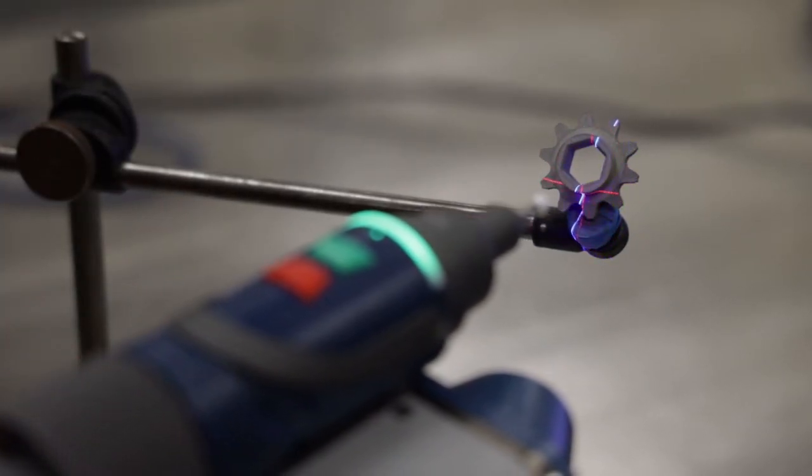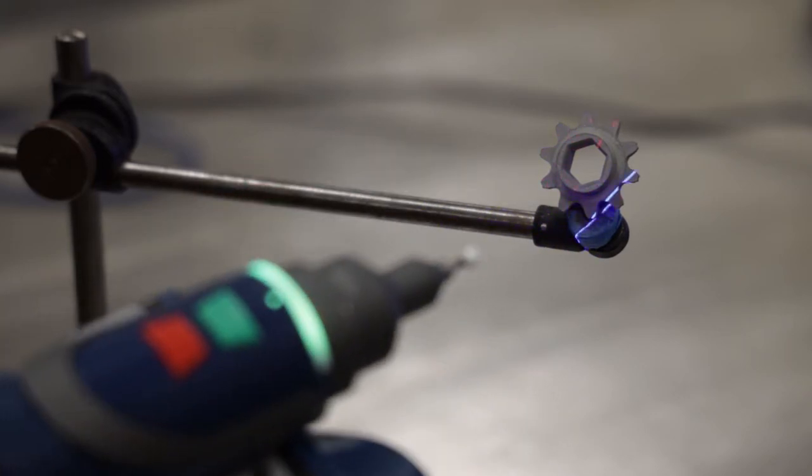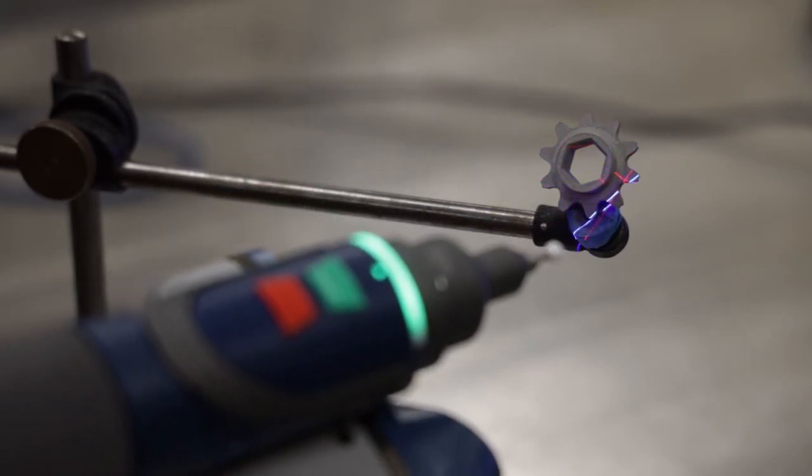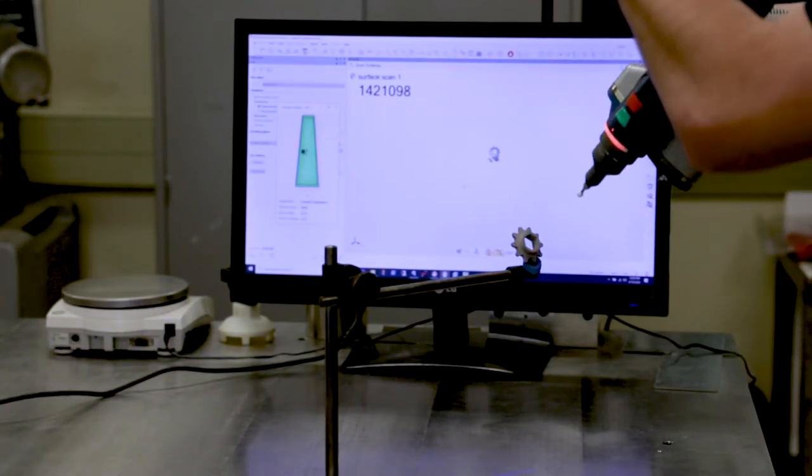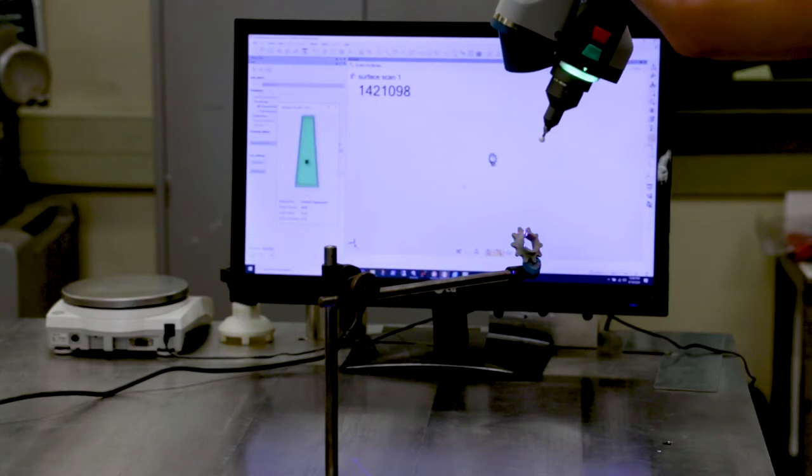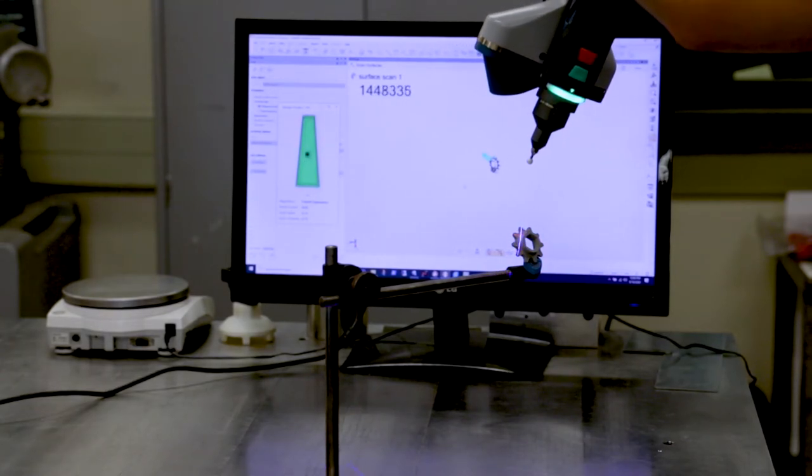With this scan data, we can compare the part. We can see where the part might be deviant from the CAD and use that to inform another process if we need to go through and print another one.